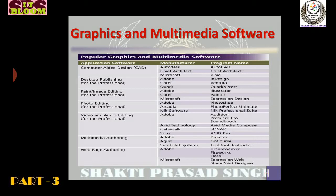Desktop publishing for professionals is given by Adobe, Corel, and Quark — these are the names of the manufacturers. The names of their software programs are: InDesign manufactured by Adobe, Ventura manufactured by Corel, and QuarkXPress manufactured by Quark. Paint and image editing software for the professional model has been produced by Adobe, Corel, and Microsoft. Adobe's program name is Illustrator, Painter manufactured by Corel, and Expression Design manufactured by Microsoft.